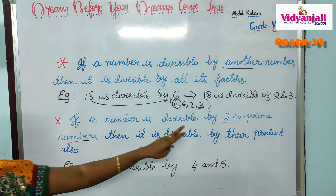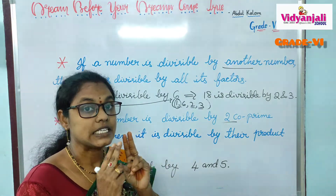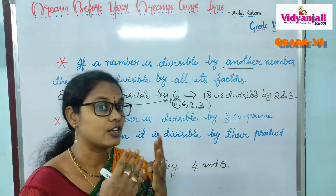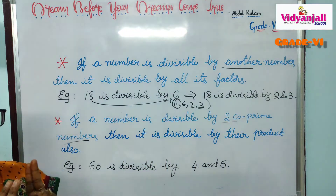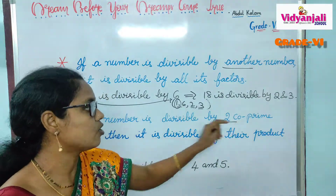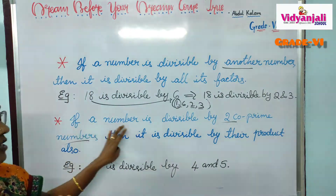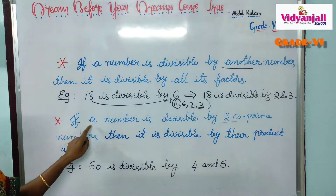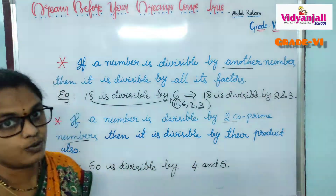Co-primes means 2 numbers which have no common factor except 1. If any number is divisible by 2 co-primes, then that number is also divisible by the product of those 2 numbers.